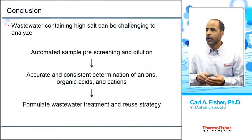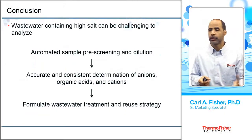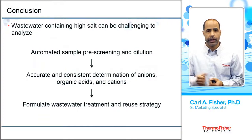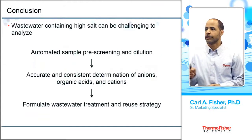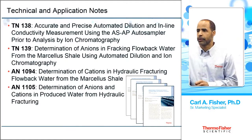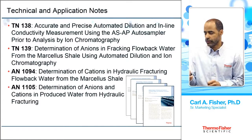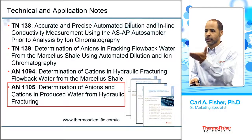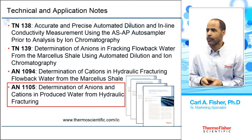To conclude: wastewater from hydraulic fracturing contains a lot of salt. You can overcome the high-salt challenge by automating — using pre-screening and dilution — to get accurate, consistent results for anions, organic acids, and cations. This helps formulate a wastewater strategy and reuse policy. Technical note 138 covers automated dilution using the ASAP autosampler; technical note 139 covers fracking flowback; application note 1105 covers produced water; and application note 1094 covers fracturing flowback cations. Additional IC innovation information is available at thermoscientific.com/IC.